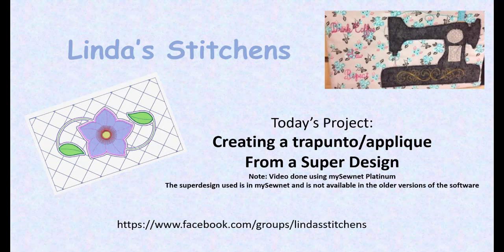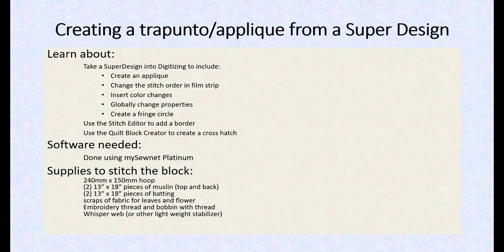So again, I used MySewnet Platinum. The super design I'm using does not come in the older versions of the software. We're going to take a super design into digitizing and we're going to create an appliqué. We're going to change the stitch order, insert some color changes, globally change properties — which is a really cool thing — create a fringe circle, use stitch editor to add a border, and then use the quilt block creator to create a crosshatch.